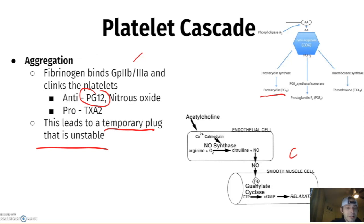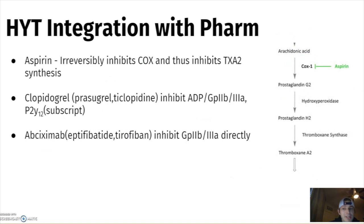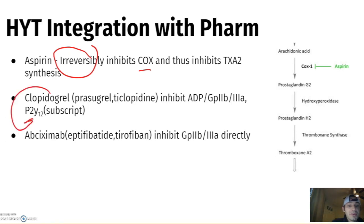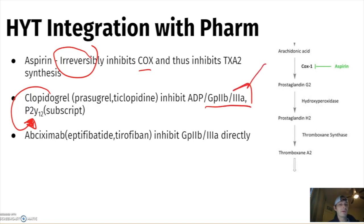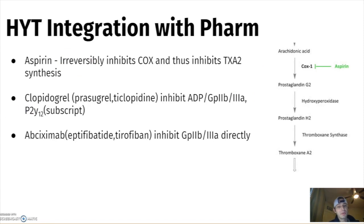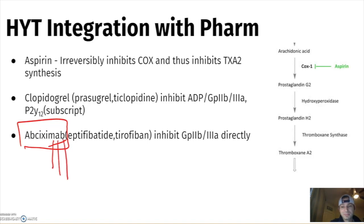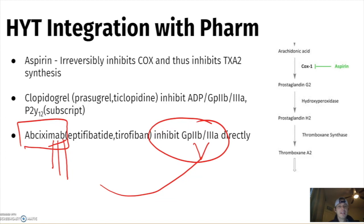Integrating with pharmacology: aspirin irreversibly inhibits COX-1 and COX-2. Clopidogrel targets P2Y12 — I'd bet anything you'll be asked this. A monoclonal antibody (the '-mab' suffix) targeting GP2b/3a leads to the same result as autoimmune-induced thrombocytopenia.